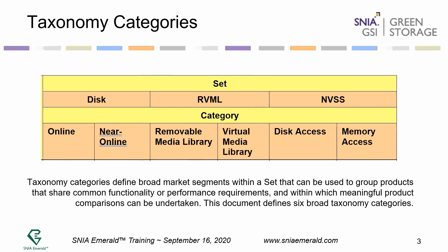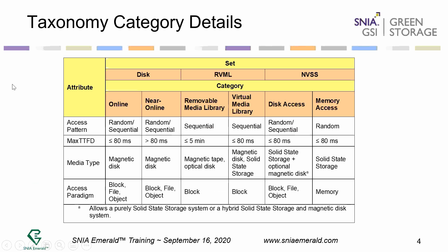In the non-volatile solid-state area, there are two types of systems: those that use disk access methodologies and those using direct memory access. In the disk set, online is random or sequential with less than 80 millisecond maximum time-to-first-data. It's typically magnetic disk, with block, file, or object access paradigms. Near-online is also random or sequential, but greater than 80 milliseconds. This can include systems that go into modified or complete spin-down, as long as they can be brought back up in the required time. They also have block, file, and object storage capabilities.